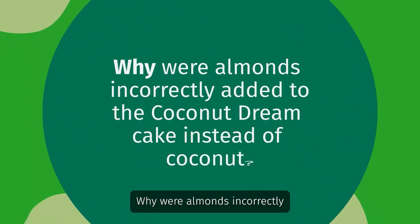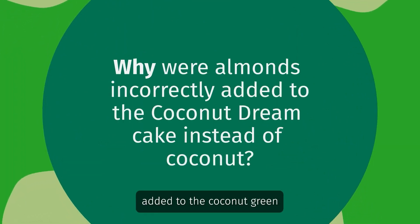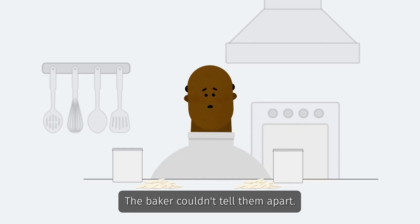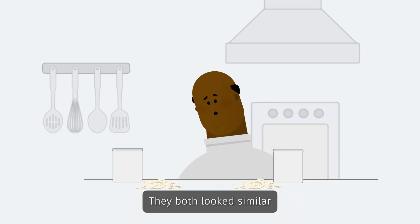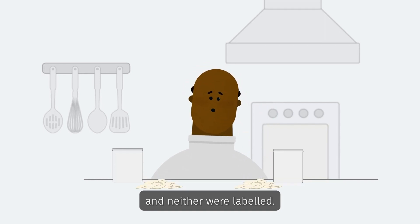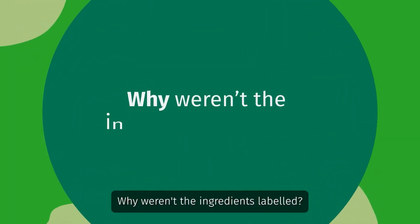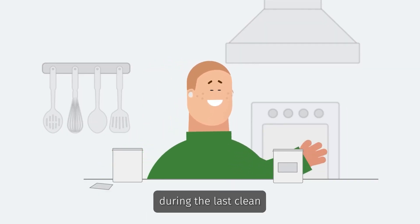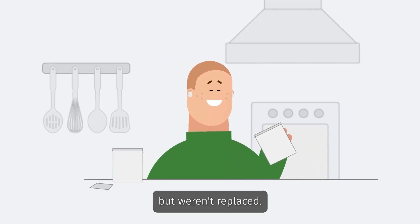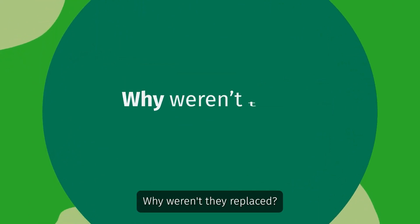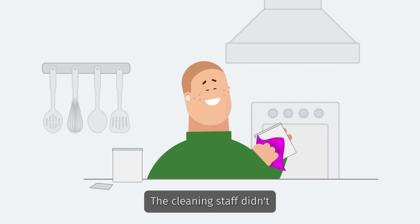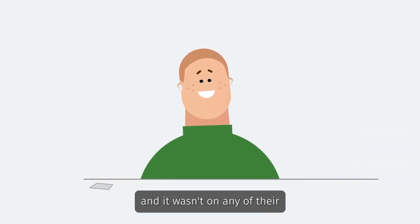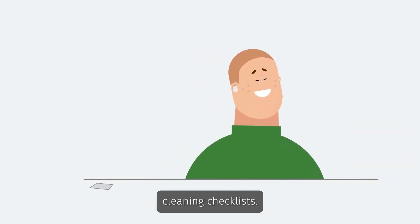Why were almonds incorrectly added to the coconut dream cake instead of coconut? The baker couldn't tell them apart — they both looked similar and neither were labelled. Why weren't the ingredients labelled? The labels were removed during the last clean but weren't replaced. Why weren't they replaced? The cleaning staff didn't consider the impact of this and it wasn't on any of their cleaning checklists.